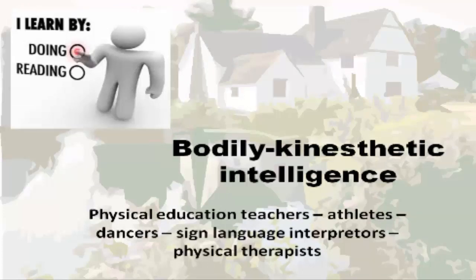Bodily-kinesthetic intelligence refers to the capacity to use the body to perform things. Examples include physical education teachers, athletes, dancers, sign language interpreters, and physical therapists — people who understand how the body works and can help train others. For example, when someone breaks a leg and has trouble walking, a physical therapist can help them train and regain the ability to walk.